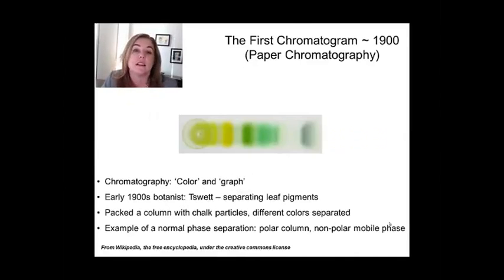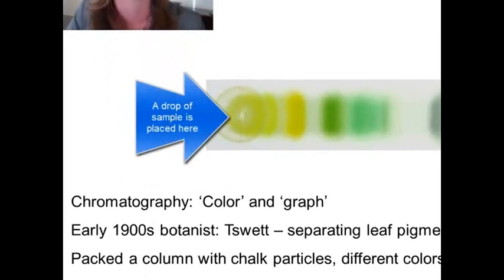So chromatography really started in the 1900s, where a botanist who was studying leaf pigments decided to try to figure out what was inside of them. So what you would see here is a type of chromatography called paper chromatography, or thin layer chromatography. It's not used very much now, at least not in a research sense, but you'll use it a lot in organic chemistry laboratories as undergraduates. And what you do is you basically spot your sample on a piece of paper, and you can see over here in this image the circle with the yellow, that was where the sample was spotted.